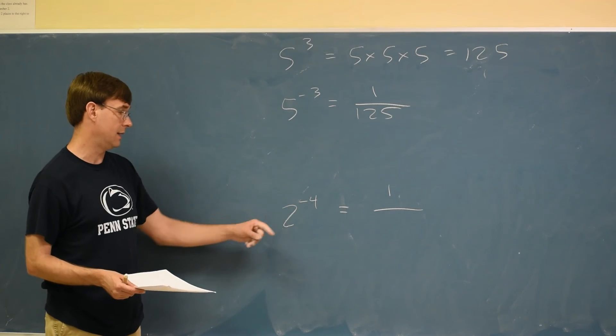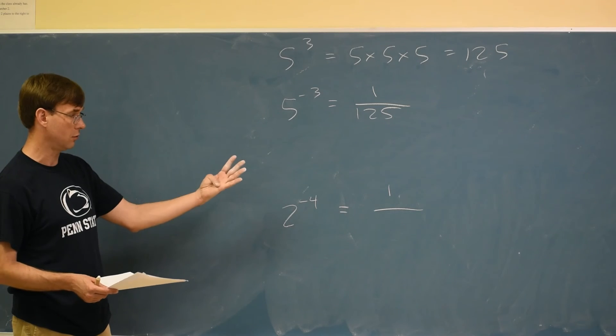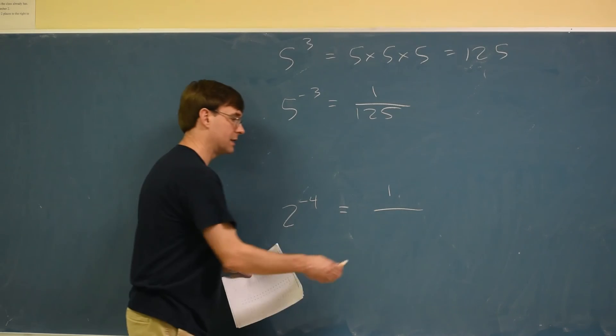What you would have to do here is figure out what 2 to the fourth is: 2 times 2, times 2, times 2. So 2 times 2 is 4, times 2 again is 8, times 2 again is 16.